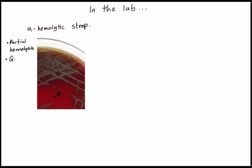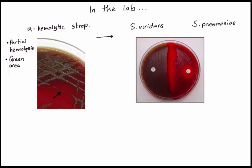Streptococcus viridans is alpha hemolytic, as is Strep pneumo. On blood agar, you're going to see partial hemolysis and green areas around the colonies. This tells us it's either Strep viridans or Strep pneumoniae.